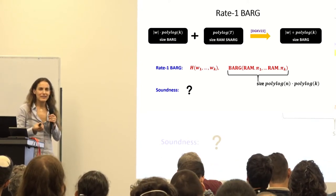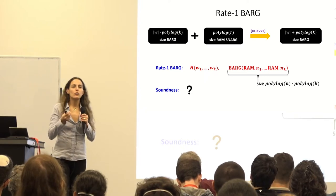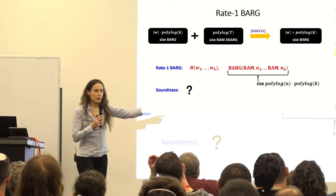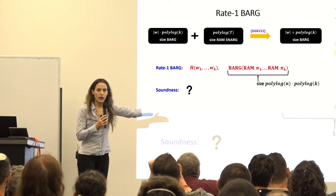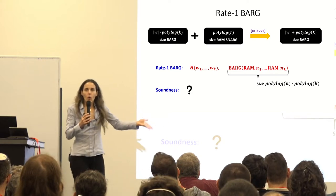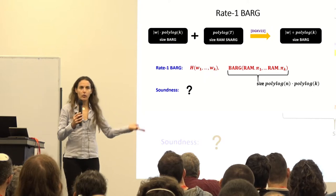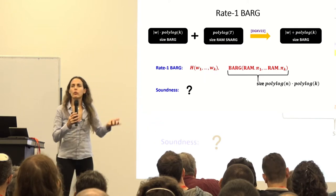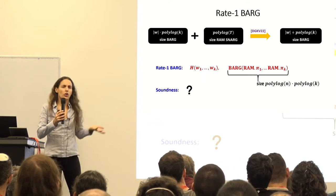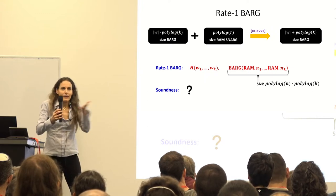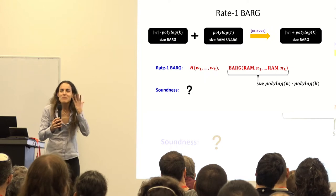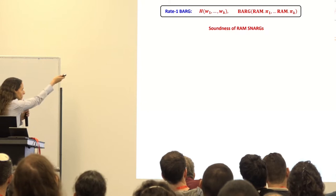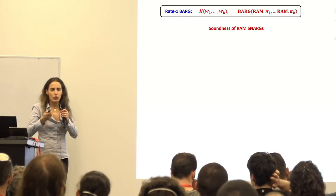The challenge is soundness. It's not even clear what RAM soundness means when the prover generates this hash — we don't know what's underneath it; he may generate garbage. The hash value is just some bits. Is the RAM proof correct with respect to what? With respect to the preimage? There's no unique preimage — it's not binding. So what soundness even means here is unclear.